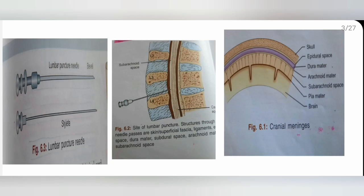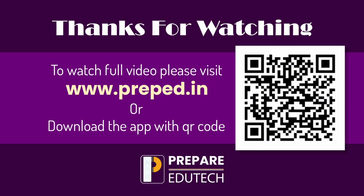Between the skull and the brain, there are layers called meninges. The meninges have three layers: the dura mater, the arachnoid, and the pia mater. CSF is found between the arachnoid and the pia mater layers.